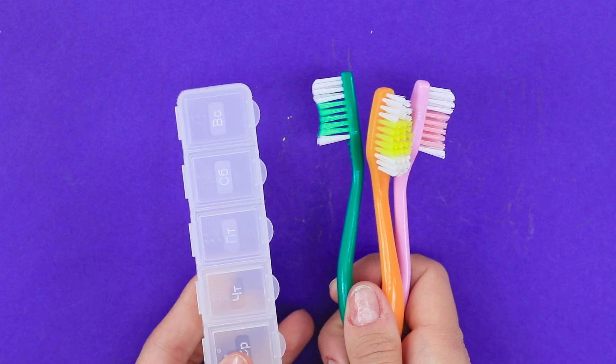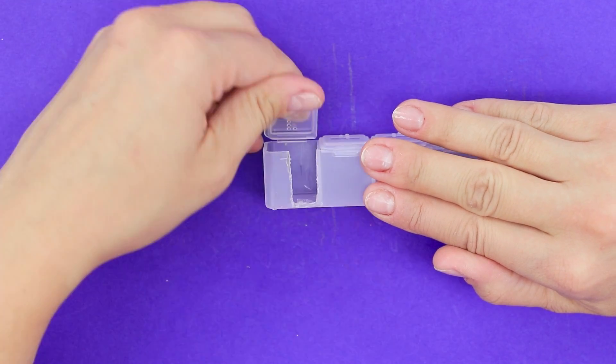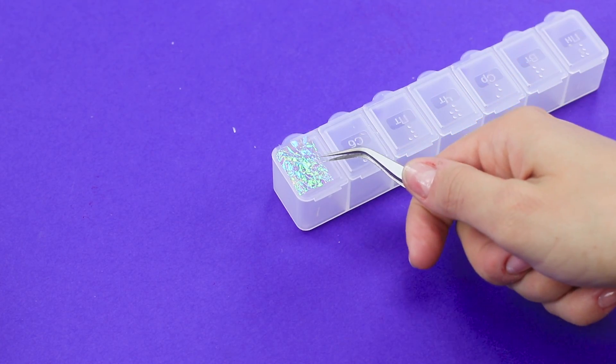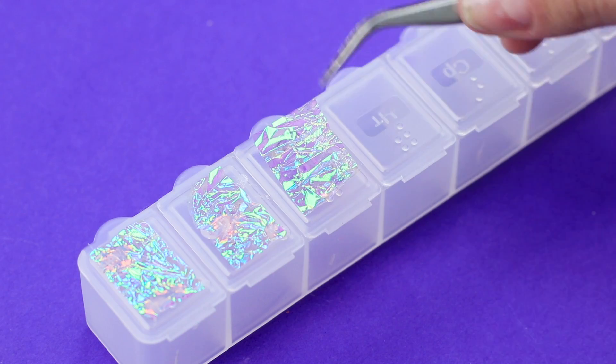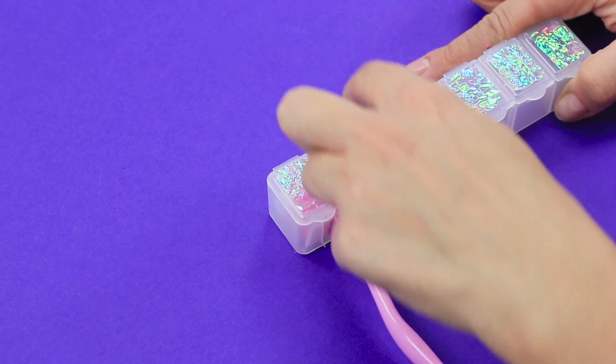For the next idea, you are going to need toothbrushes and a pill container. Cut out rectangular holes in the container. Decorate the caps with the days of the week with shiny film. Put the brushes in the case. A family toothbrush case is ready!